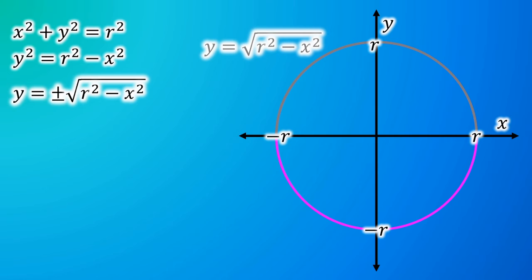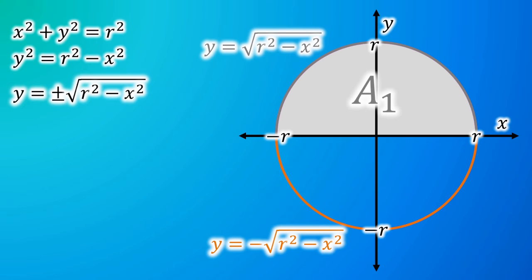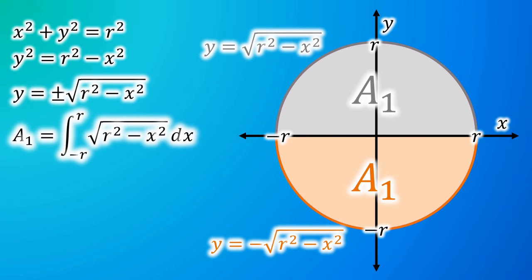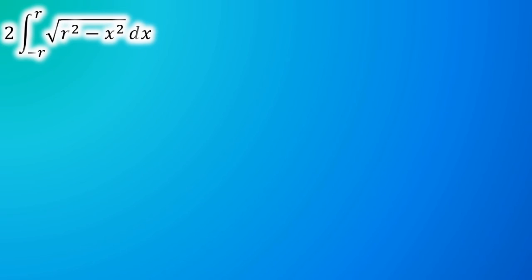Here is the area of the semicircle. That area would be the integral from negative r to r of the square root of r² minus x² dx. The other semicircle has the same area, so the area of the full circle equals 2 times that integral: 2·∫₋ᵣʳ √(r²−x²) dx. To integrate this, we use trigonometric substitution.